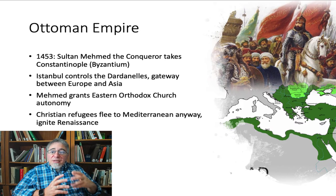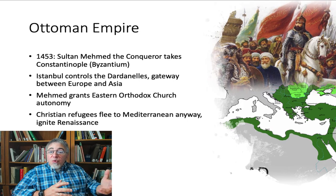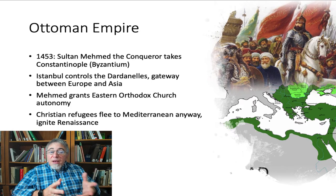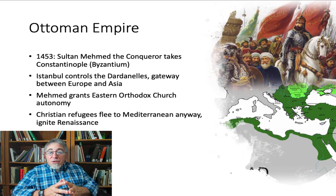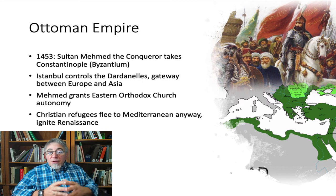Mehmed took the city as his new capital and renamed it Istanbul. The Sultan allowed Christians and Jews to continue living in Istanbul and granted the Eastern Orthodox Church autonomy as long as they accepted Ottoman authority. Even so, many Christian refugees left the city and found their way to cities like Venice and Florence, where they and their wealth and the books they brought helped to ignite a period known as the Renaissance.